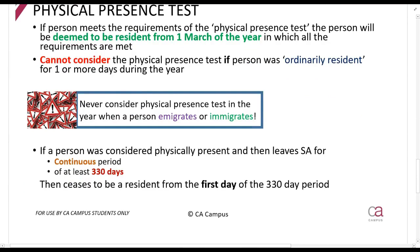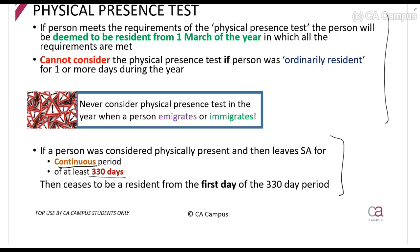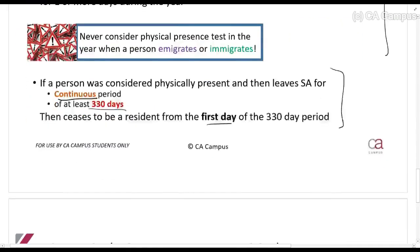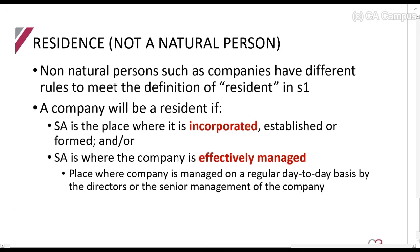If a person then leaves South Africa for a continuous, unbroken period of at least 330 days — meaning they don't return to South Africa for 330 days — then they will no longer be considered physically present in South Africa. They will go back to the first day that the person left and treat them as not resident from that date, so any taxes charged would be cancelled. This is something to be aware of, though it is not often tested.